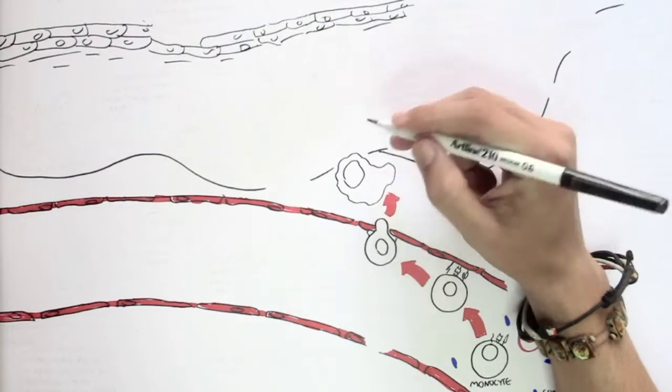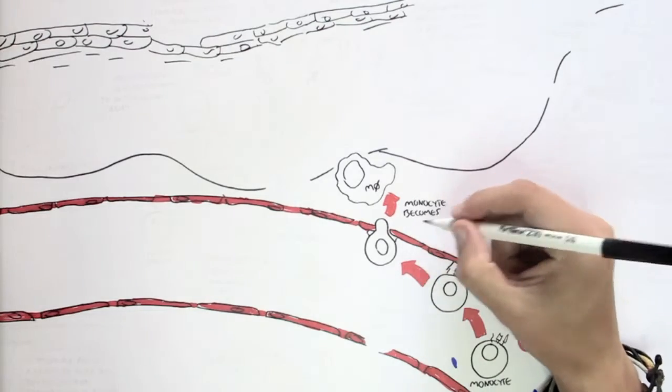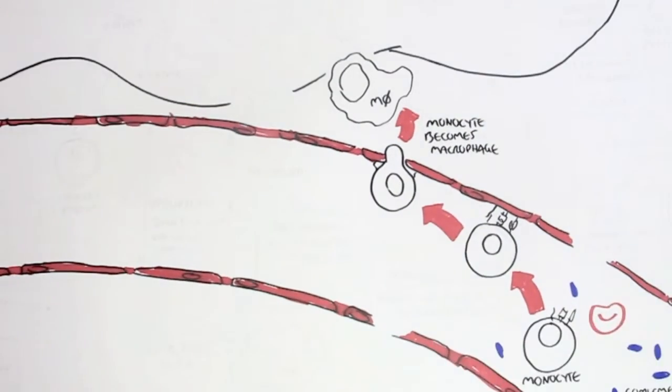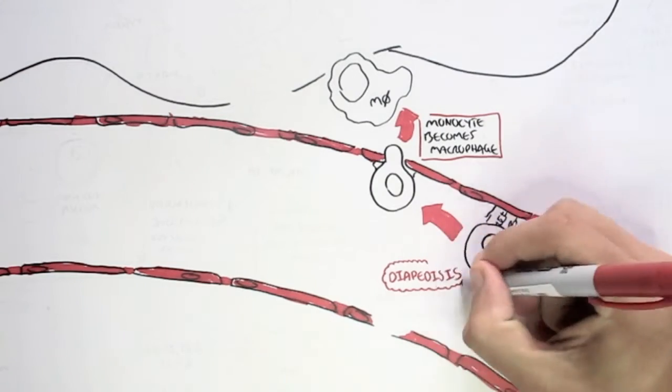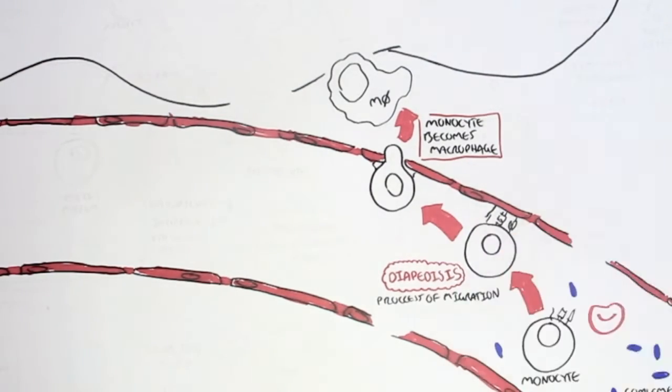I designate it with an M, with an O and a dash. That's an easy abbreviation for a macrophage. And the process of migration for all cells, including the monocyte, is a process known as diapedesis. So it's the process of migration.